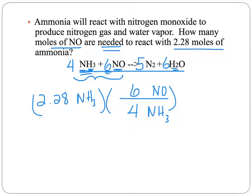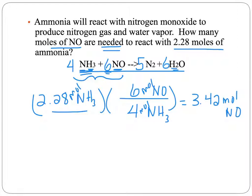If you go ahead and do the math, you will discover that you need 3.42 moles of nitrogen monoxide to react with 2.28 moles of ammonia. Instead of a 4-to-6 ratio, we're going to have 2.28 to 3.42. You can also set this up as a cross multiplication problem, because you're really just creating two equivalent fractions — both methods give the same result.